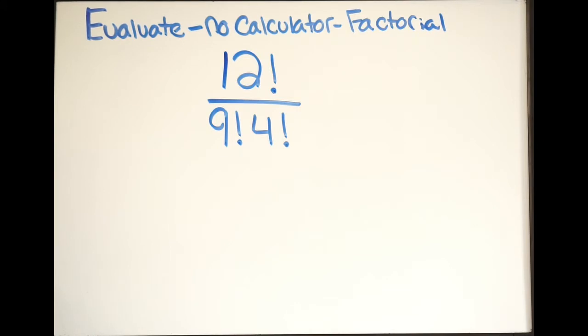For those who are unaware what a factorial is, it's going to be this little exclamation point. And what it's saying is it's simply just going to be a product of integers starting at 1 and then going to that designated integer.